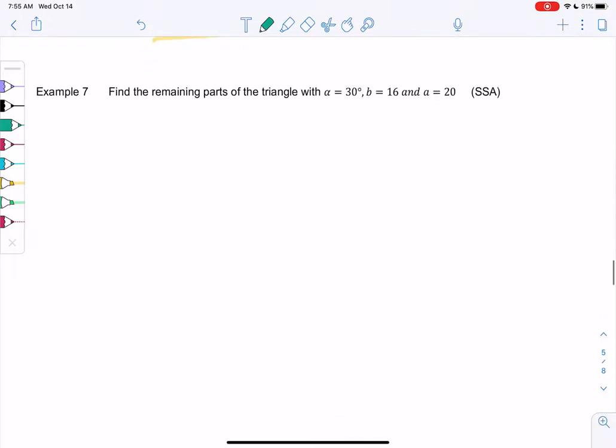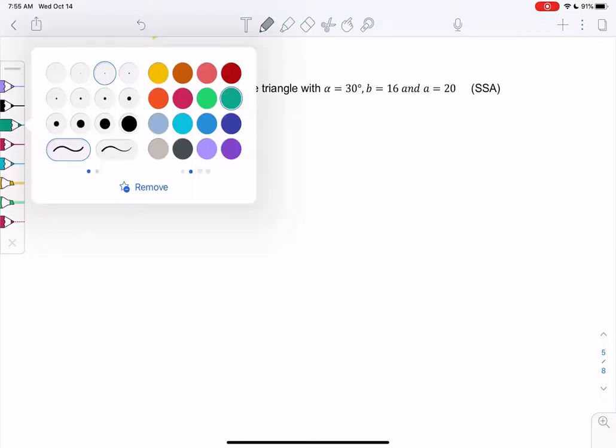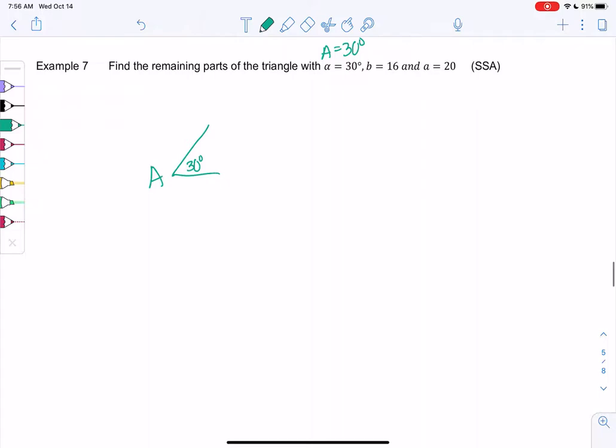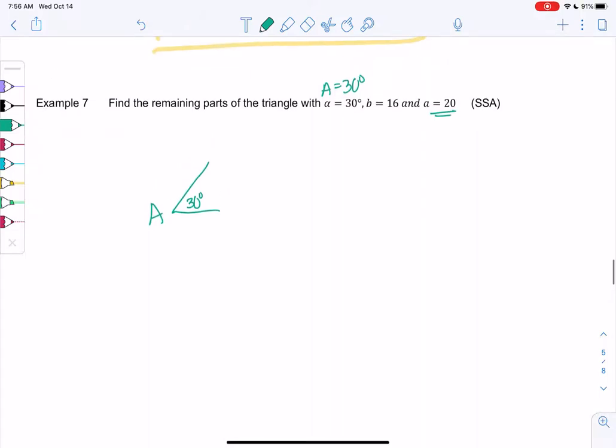So example 7, we'll do one more of these, find the remaining parts. This time we have alpha, which is the same as A, capital A. So A is 30 degrees. B is 16, and then A is 20. So 20 is the opposite side. So B is 16, and then 20 is the opposite side.